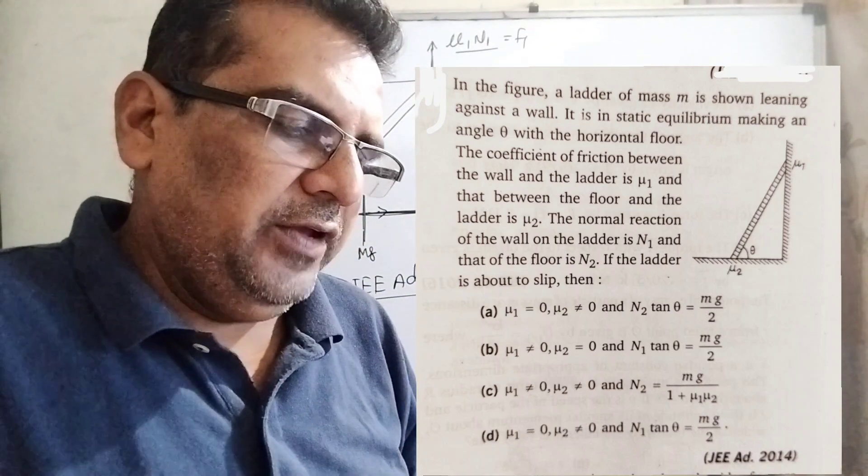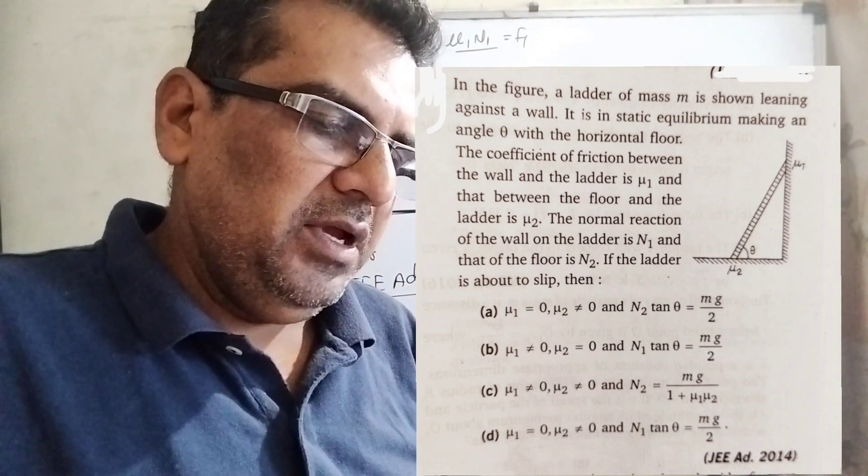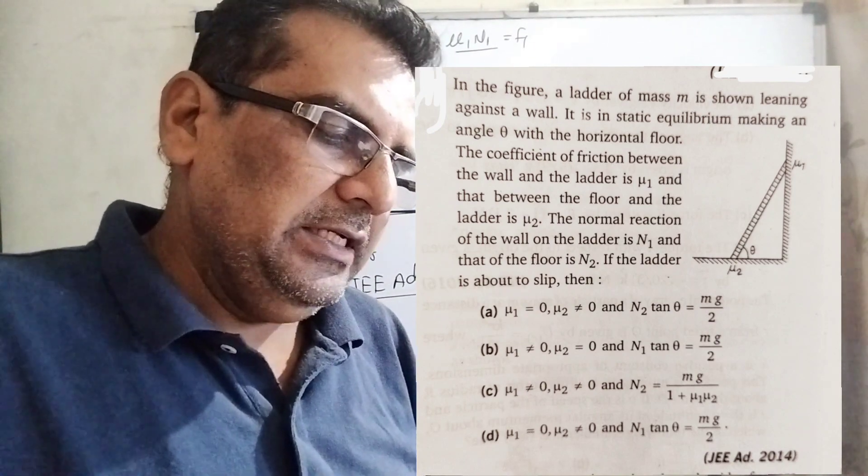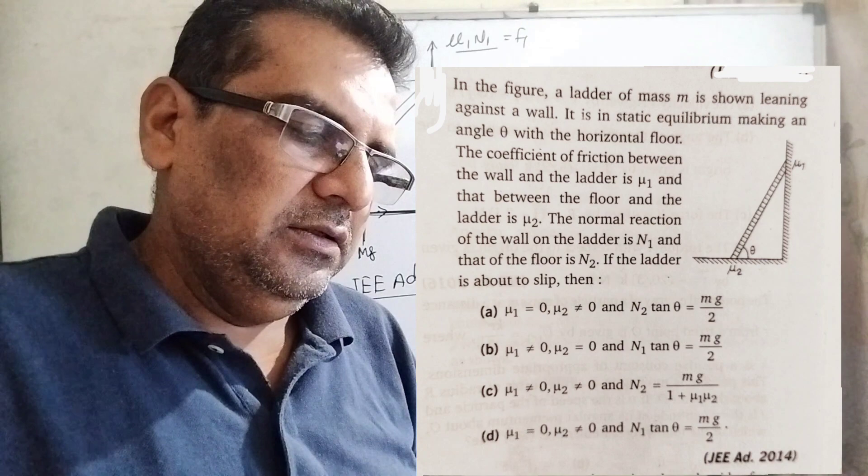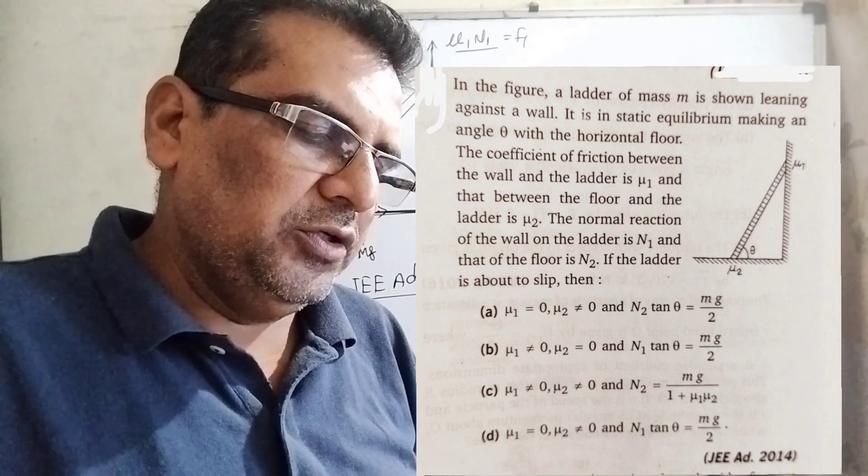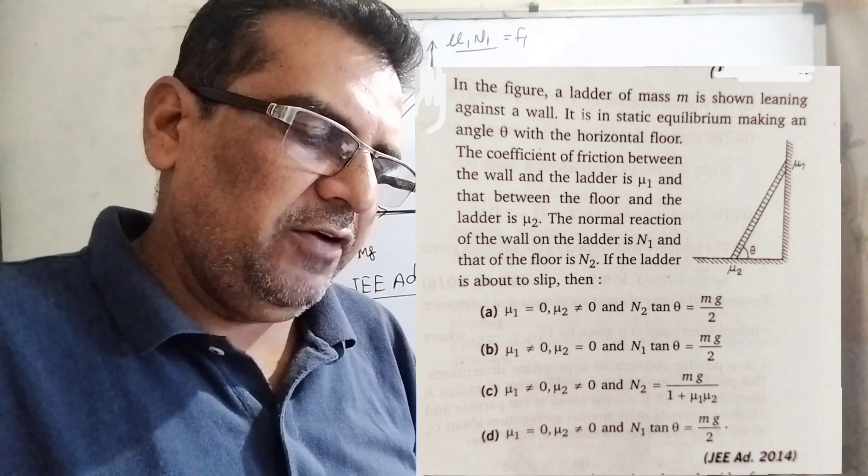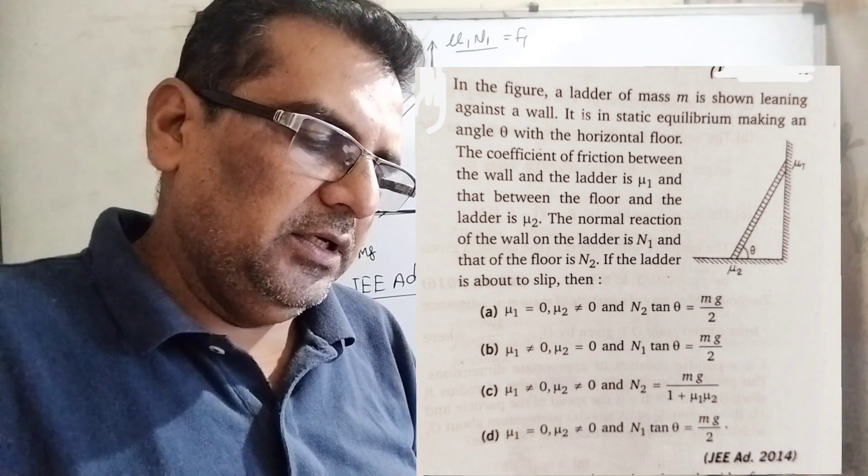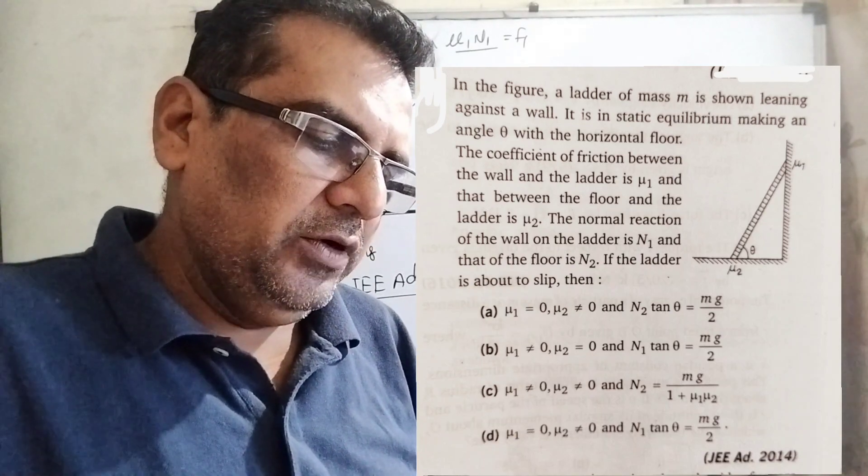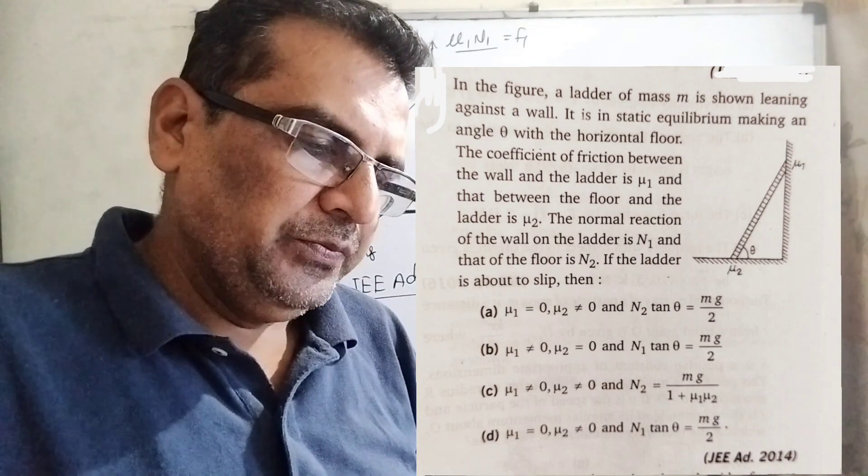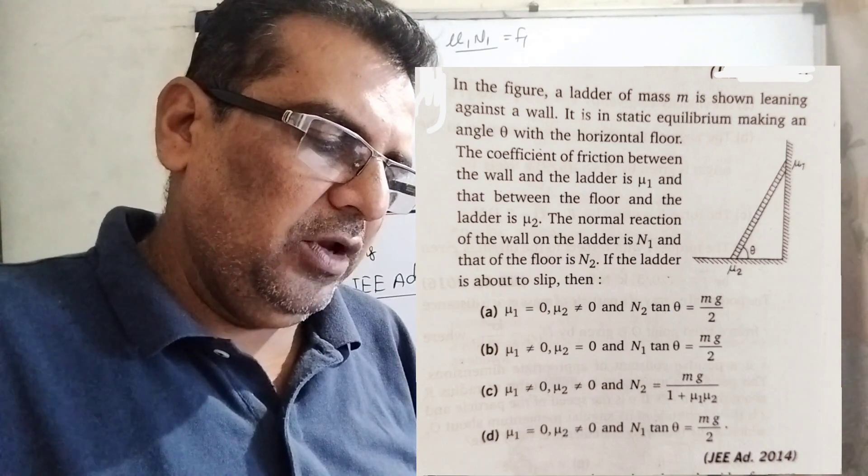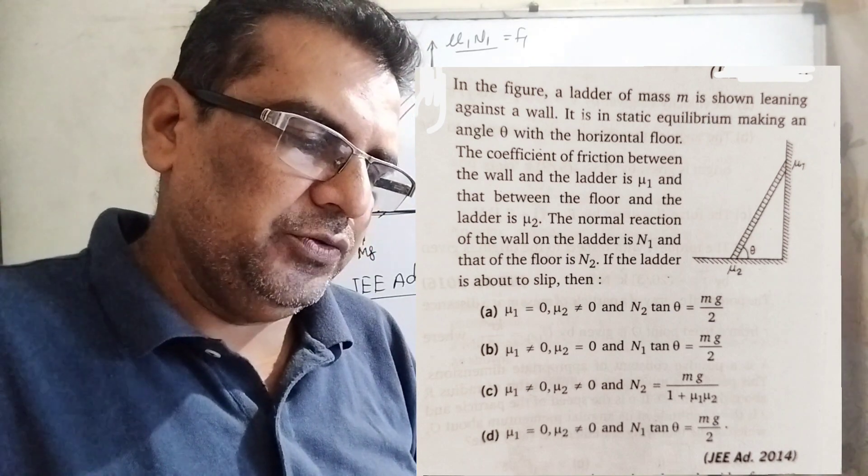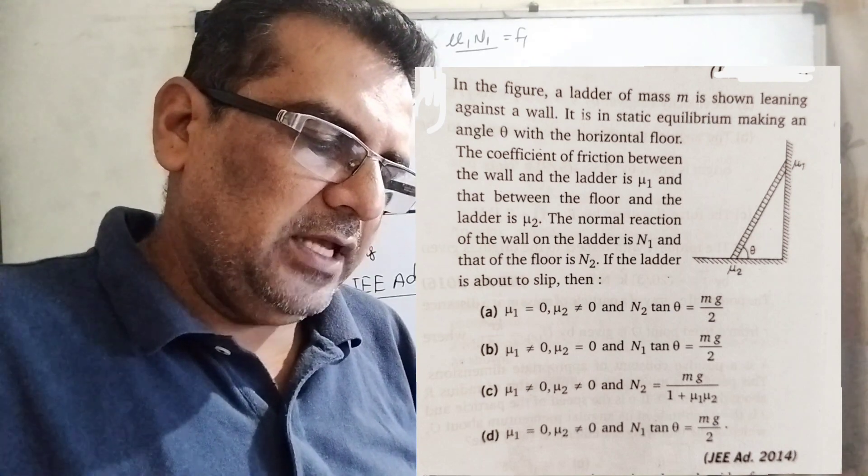Let's see what the question says. In the figure, a ladder of mass m is shown leaning against a wall. It is in static equilibrium making an angle theta with the horizontal floor. The coefficient of friction between the wall and the ladder is mu1, and that between the floor and the ladder is mu2. The normal reaction of the wall on the ladder is N1, and that of the floor is N2. If the ladder is about to slip, then you have given four options.